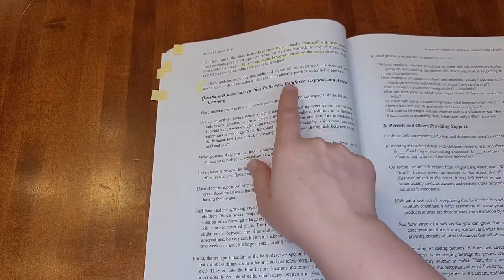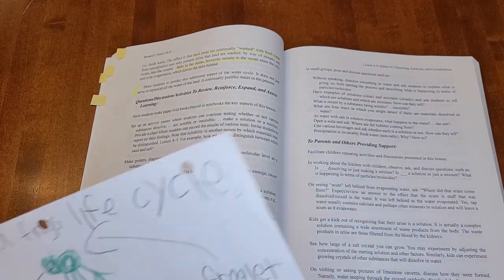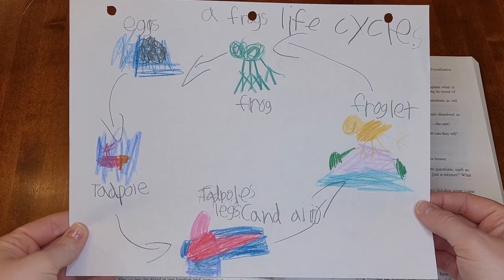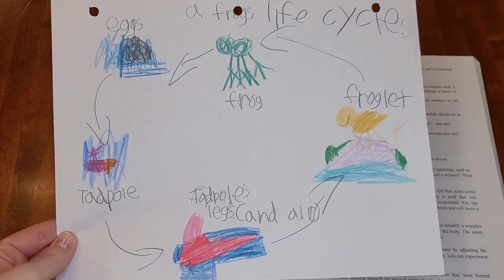We usually always do the science notebook, which for my daughter, I don't require a ton for her. For example, here's her notebook page from when we studied life cycles. She drew, she looked up in our science encyclopedia an animal that she was interested in and then drew their life cycle.